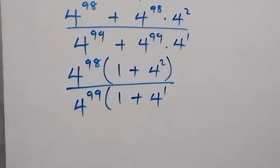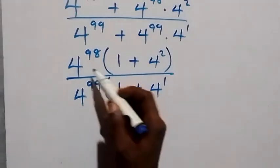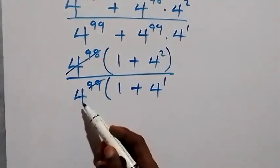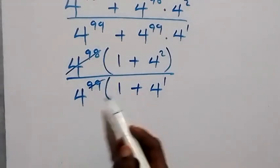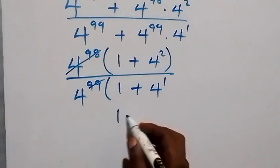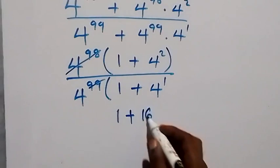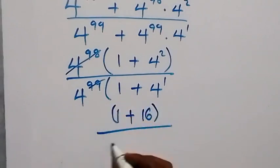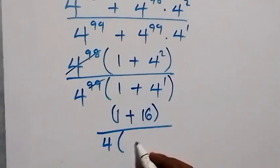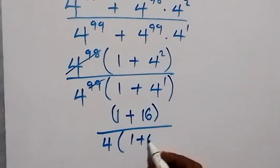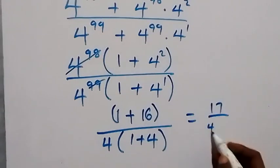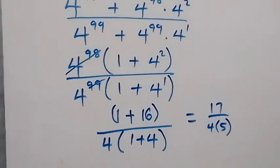From here, 4 raised to power 98 cancels with 4 raised to power 99 — only 4 raised to power 1 which is 4 remains in the denominator. Up top we have 1 plus 4 squared, that's 1 plus 16 which is 17. In the denominator we have 4 times 1 plus 4, that's 4 times 5 which is 20.